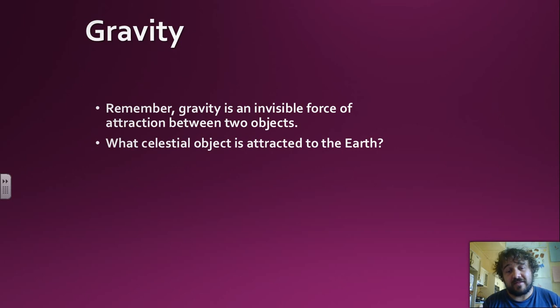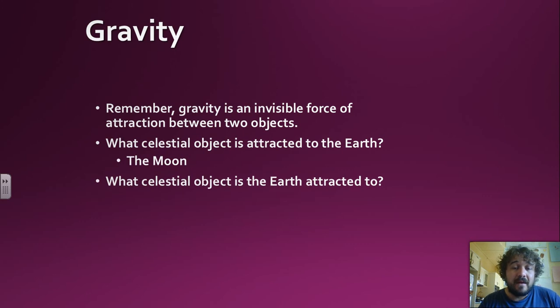So which celestial object is attracted to the Earth? Celestial means in space, obviously—that's the Moon. And which celestial object is the Earth attracted to? That's the Sun. We're also attracted to the Moon, but the Sun's much, much larger.